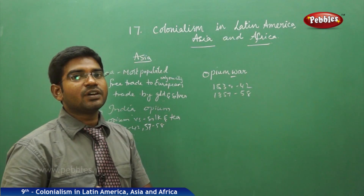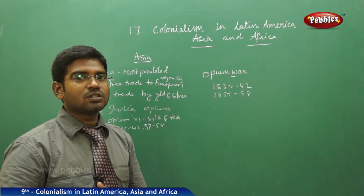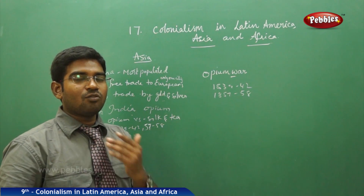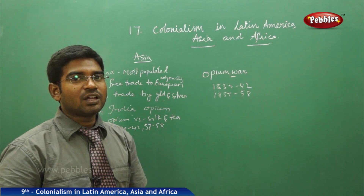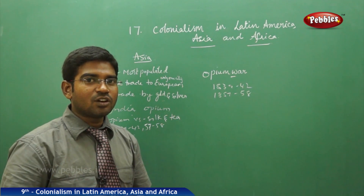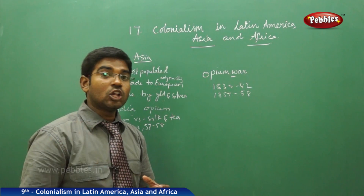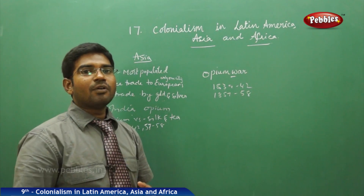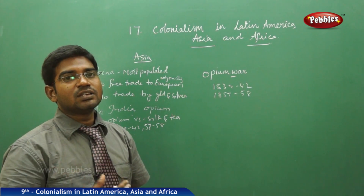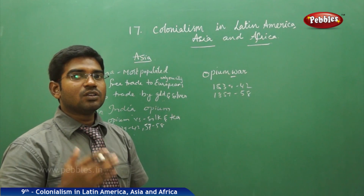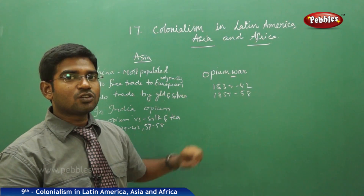Finally, Japan — which had undergone rapid industrialization following its revolution in 1861 — was in need of colonies to obtain raw materials at low cost. In 1894, Japan went to war with China, defeated China again, made China surrender some regions to Japan, and also forced China to pay a huge war indemnity.